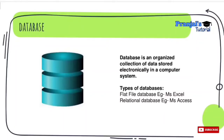There are different types of databases — two main types. First is a Flat File Database, for example MS Excel, where data is stored in a single table with no relationships between tables. Second is a Relational Database, for example MS Access, where data is stored in multiple tables and we can establish relationships and link those tables together.